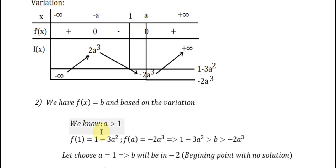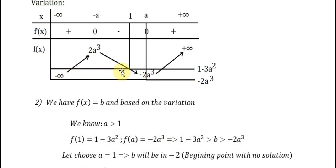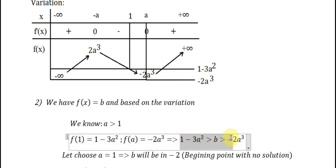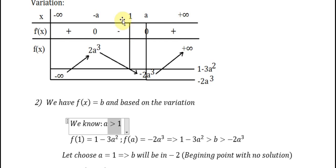If we put 1 into the function, that gives f(1) equals 1 minus 3a power 2. And if we put a into the function, we get minus 2a power 3. Since the line b should intersect in 3 points, the line must be between the minimum and maximum values. That is why a should be greater than 1, because the solution beta will be between 1 and a on the variation table.